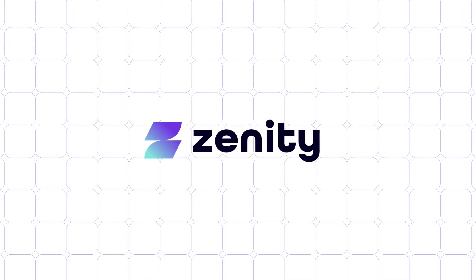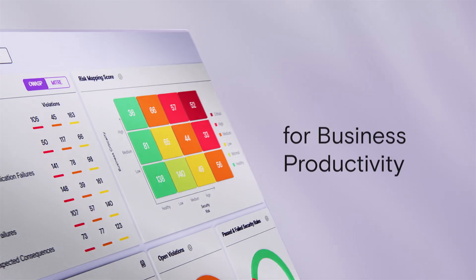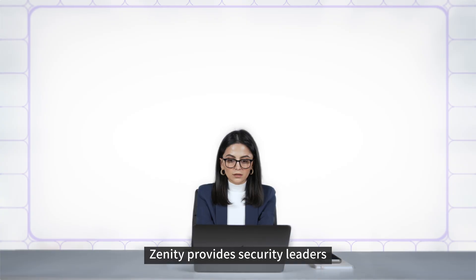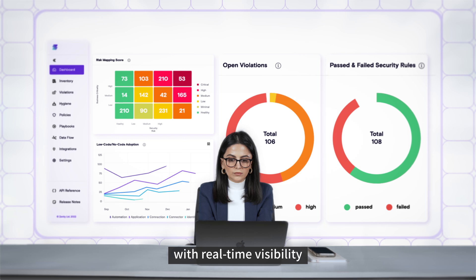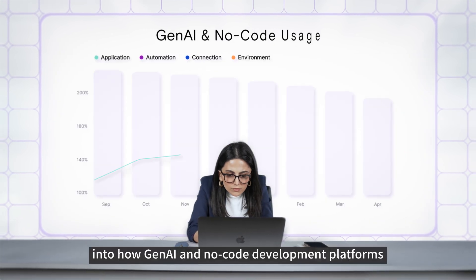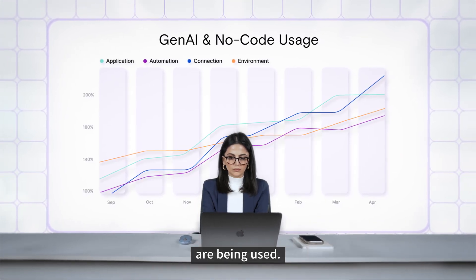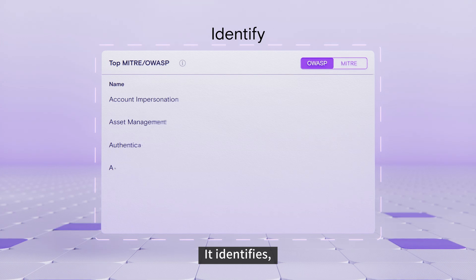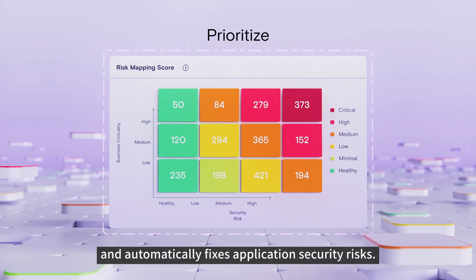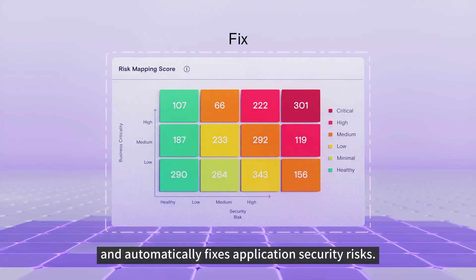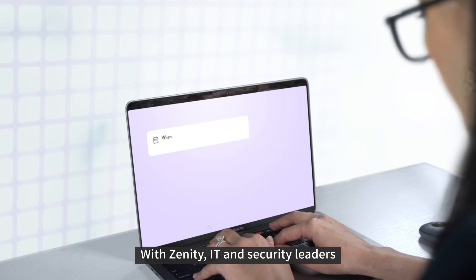Enter Zenity — the first security governance platform for business productivity. Zenity provides security leaders with real-time visibility into how Gen.AI and no-code development platforms are being used. It identifies, prioritizes, and automatically fixes application security risks.